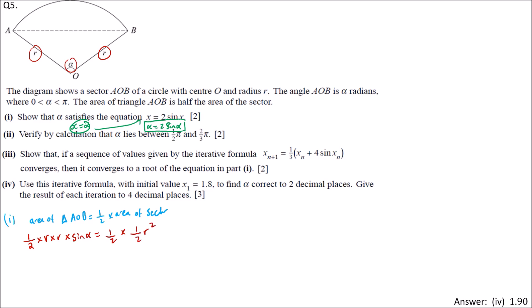R is the radius R, but theta is alpha. So we have half R squared sin alpha equals half times half R squared alpha.